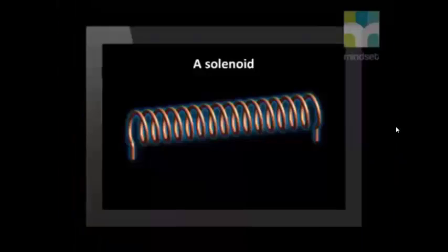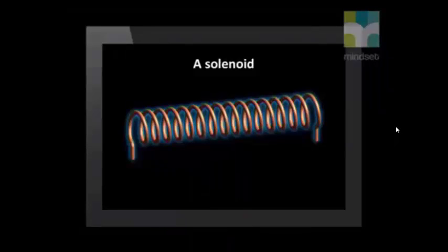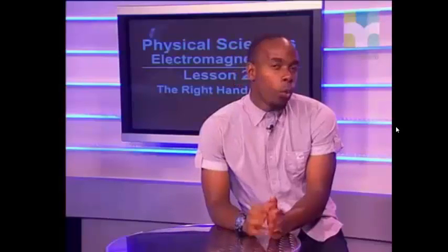A solenoid consists of a large number of insulated turnings that form a cylindrical coil. Normally it is made from copper wire, as you can see here, and it is turned around a cardboard cylinder. We can do the same experiment with the solenoid as we did with the coiled conductor — the results with the iron filings will look like this.